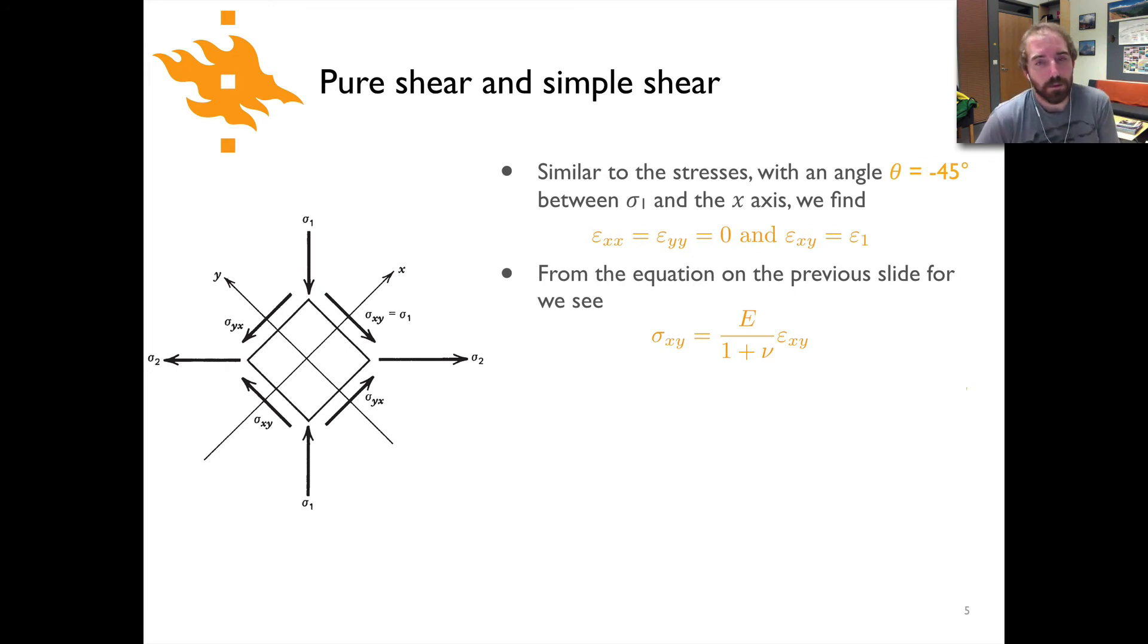Now similar to the stresses, in terms of having this 45 degree offset between the coordinate system and the principal strain axes, we can see that epsilon xx and epsilon yy are equal to zero, and epsilon xy is simply equal to epsilon one. That's just exactly the same thing we showed on the previous slide in terms of strain rather than stress. From the equation on the previous slide, we can then plug in epsilon xy in place of epsilon one, and we have our relationship between the shear stress sigma xy and epsilon xy in terms of the elastic properties Young's modulus and Poisson's ratio.